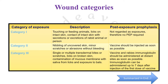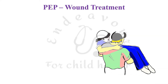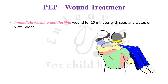Remember that immunoglobulins can be given up to seven days after the injection of the first dose of vaccine. Post-exposure prophylaxis has three components: first is wound treatment, second is the vaccine, and third is rabies immunoglobulin — required only if it is a category three wound.